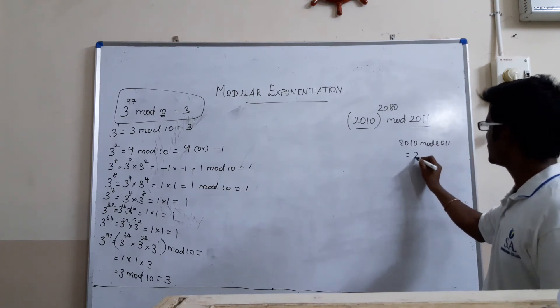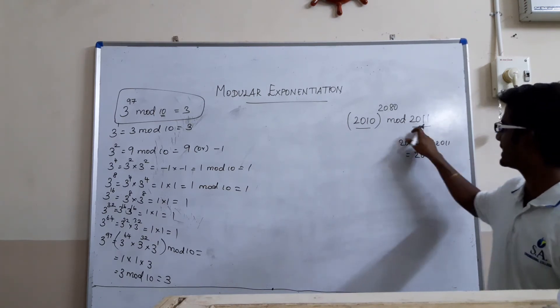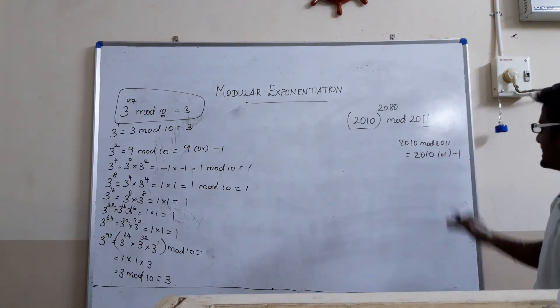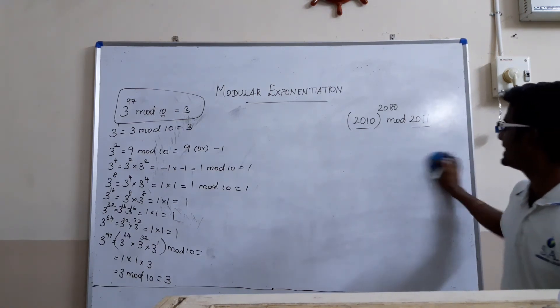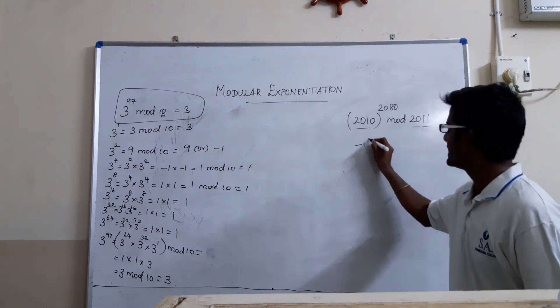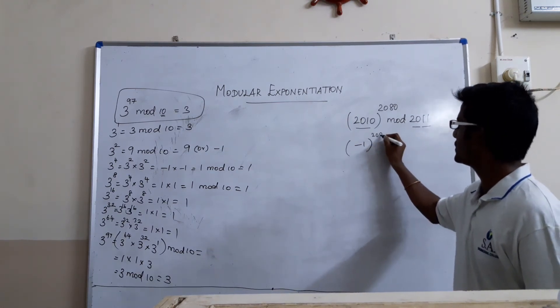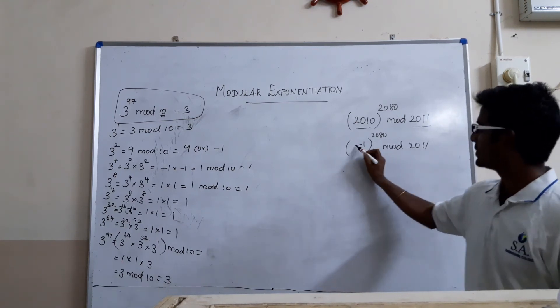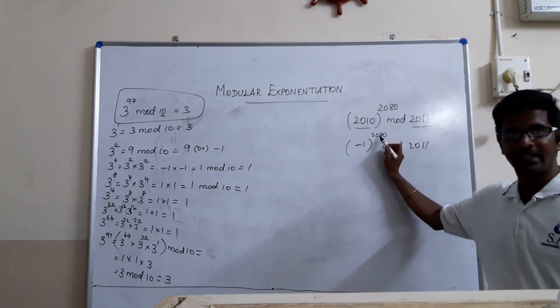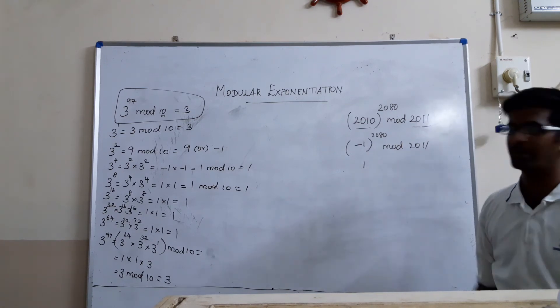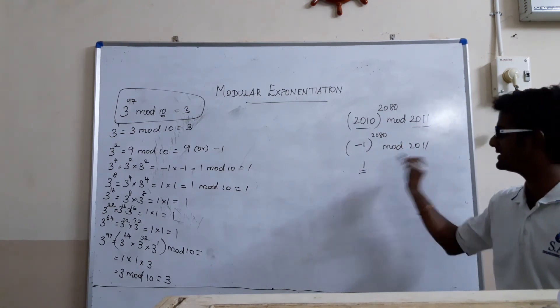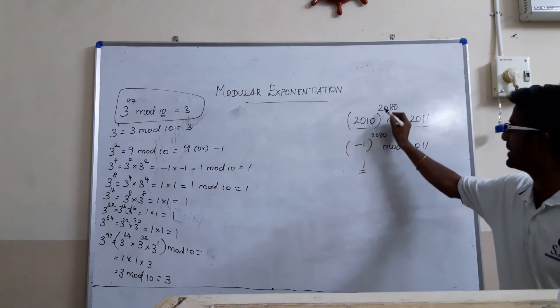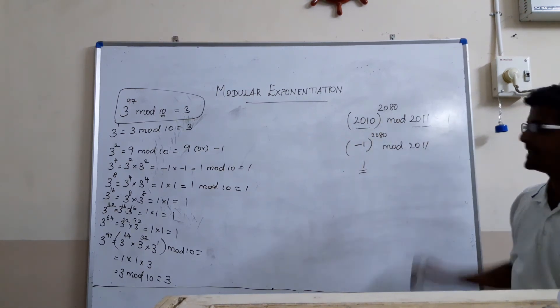It can be 2010. So, this number can be written as 2010 or minus 1. Isn't it? So, I will take minus 1 which is the smaller number. It means I am just reducing it as minus 1 whole power 2080 mod 2011. So, any minus number power an even number will be plus number 1 only. The final answer is plus 1 only. So, the answer for 2010 power 2080 is going to be plus 1.